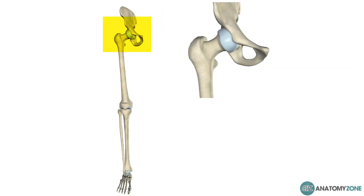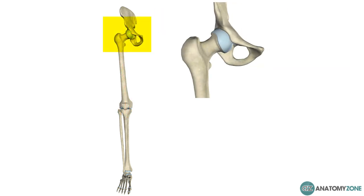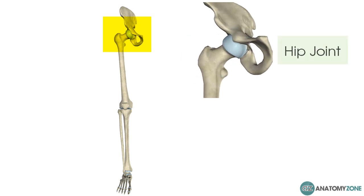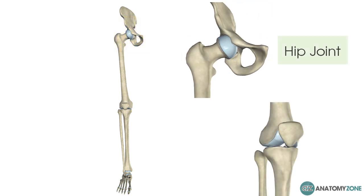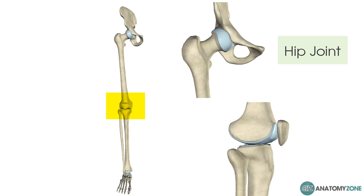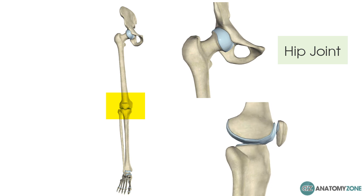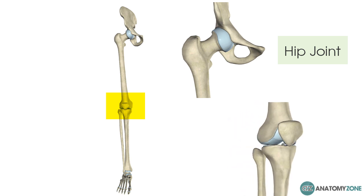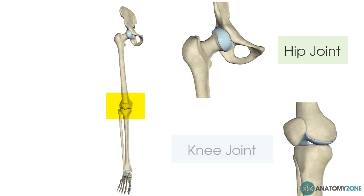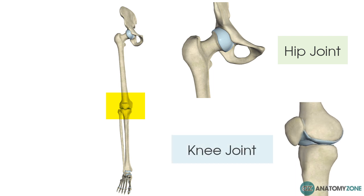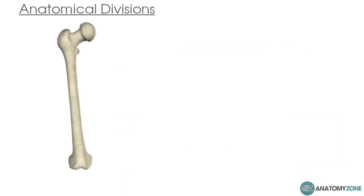Superiorly it articulates with a part of your hip bone called the acetabulum to form the hip joint, and inferiorly it articulates with the patella to form the patellofemoral joint and the tibia to form the tibiofemoral joint, or what we would collectively call the knee joint. Anatomically, the femur is divided into three regions which we're going to discuss in turn in this tutorial.